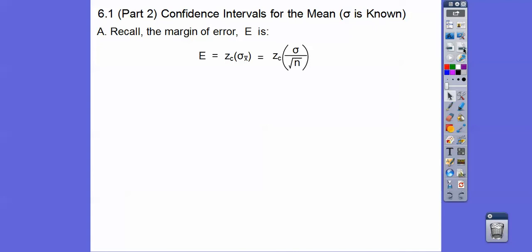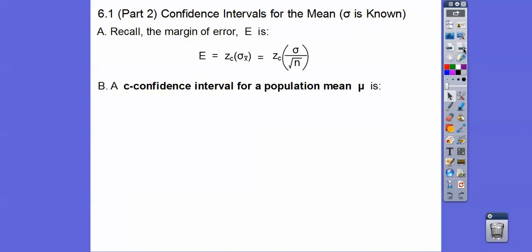Recall the margin of error is calculated by this formula where we find our z-score for the population, which we listed in the last lesson. Times the population standard deviation divided by the square root of n, the square root of your sample size. A z-confidence interval for a population mean is that value right here.